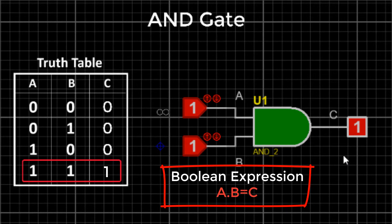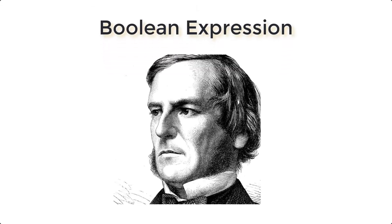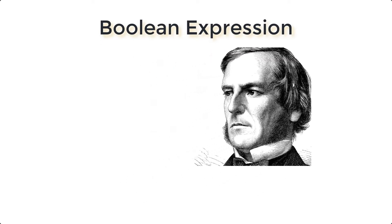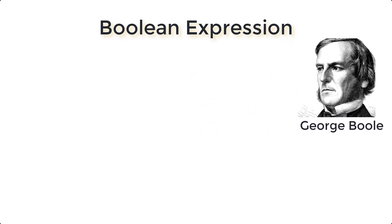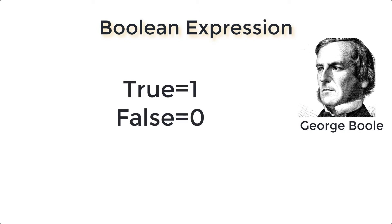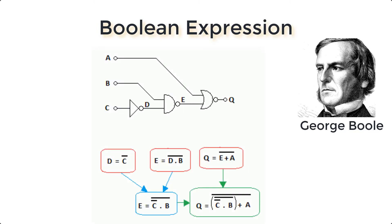So the boolean expression of AND gate is C = A·B. A boolean expression, named for mathematician George Boole, is an expression that evaluates to either true or false — where true means one and false means zero. In computer science, a boolean expression is used in programming languages. When we write the function of a digital circuit in mathematical form, it is called boolean expression or boolean algebra.